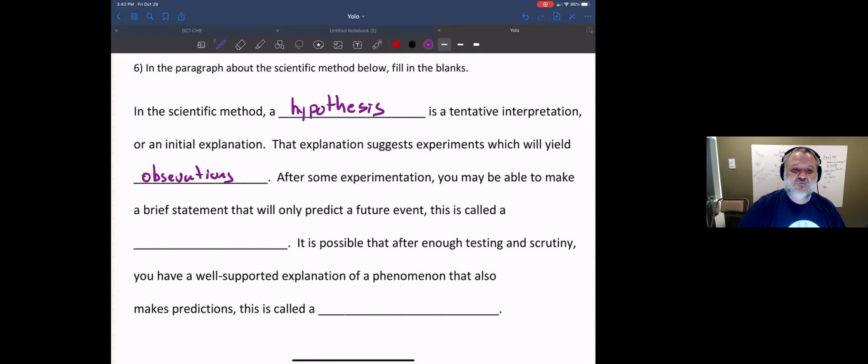Hypothesis, initial explanation, then suggests experiments. Experiments yield observations. Observations allow you to refine your hypothesis. Refinement of the hypothesis suggests experiments. Experiments get you more observations over and over again.